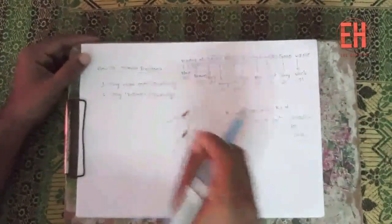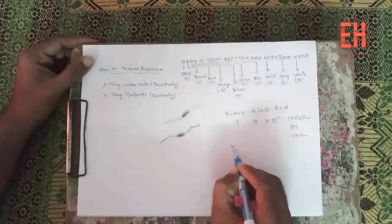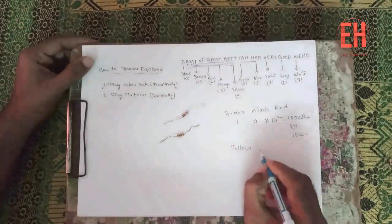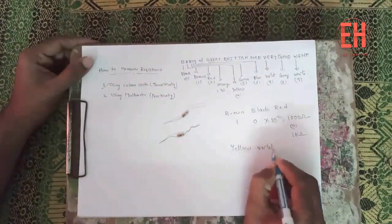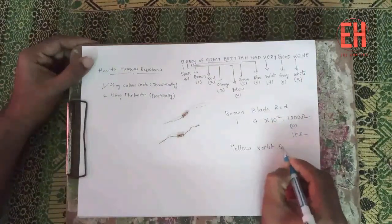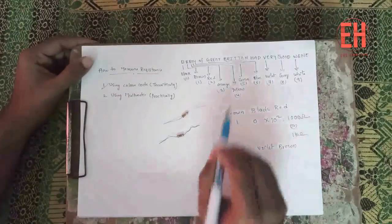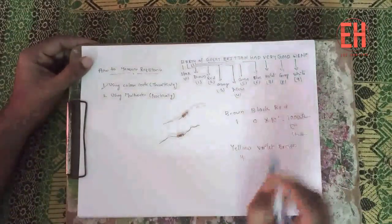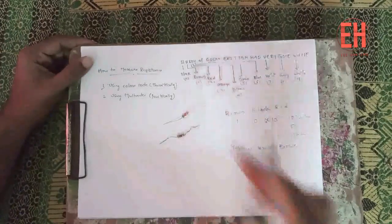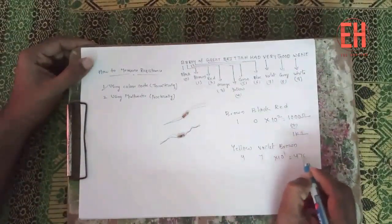Let us calculate for one more resistance. The first band is yellow, next one violet, next one brown. Yellow means 4, violet means 7, brown means 1 — into 10 to the power of 1 — giving 470 ohms.